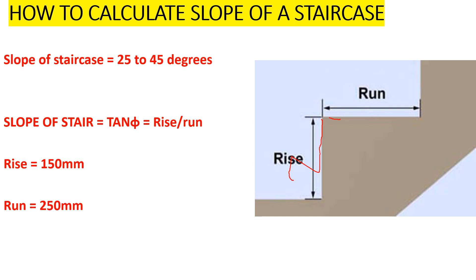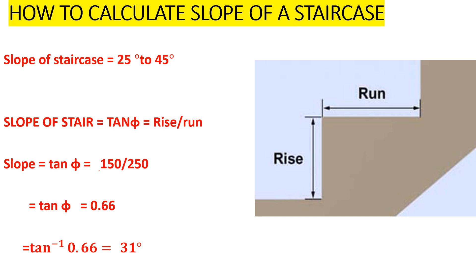Once we have the measurement, then it's going to be very easy for us to calculate the slope. Now let's calculate the slope. So our slope will be tan theta which is 150 over 250. 150 is the rise, 250 is the run.